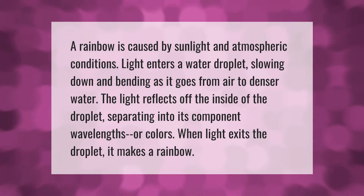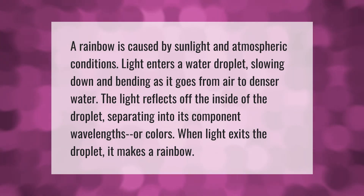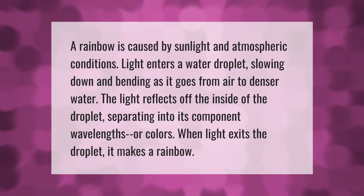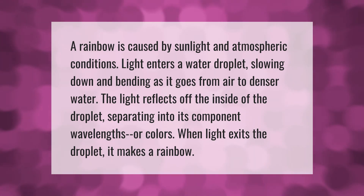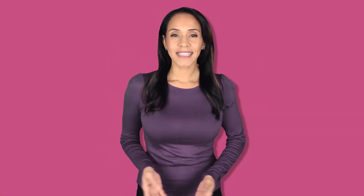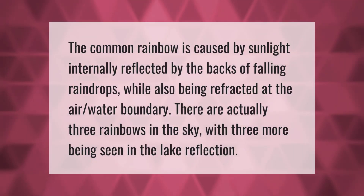A rainbow is caused by sunlight and atmospheric conditions. Light enters a water droplet, slowing down and bending as it goes from air to denser water. The light reflects off the inside of the droplet, separating into its component wavelengths or colors. When light exits the droplet, it makes a rainbow.